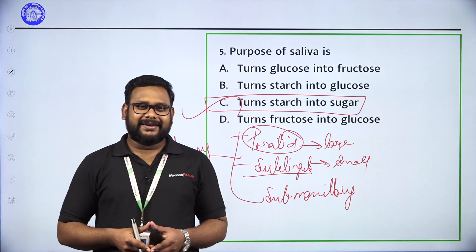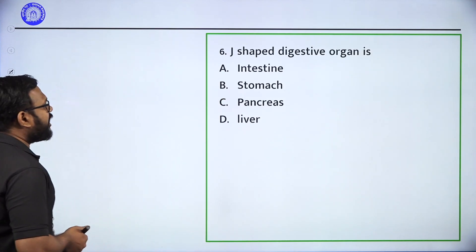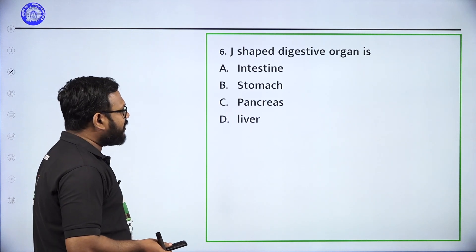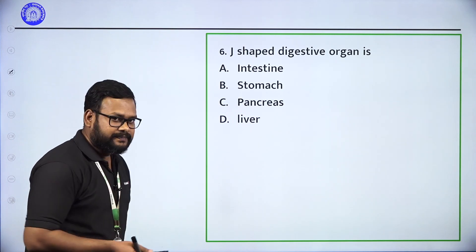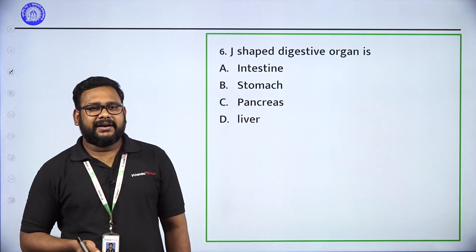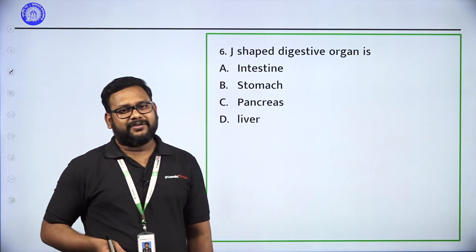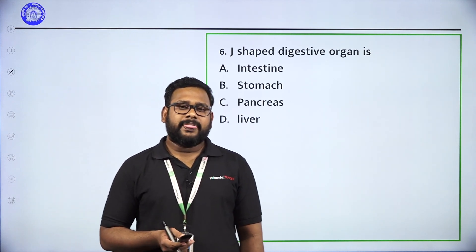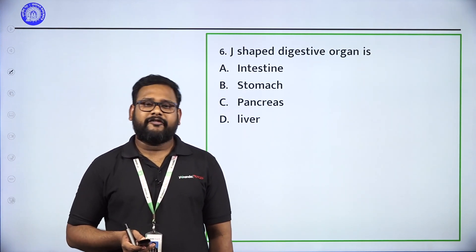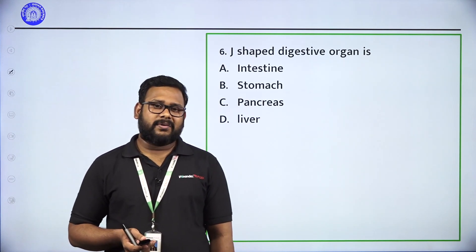Let's look at the next question: The J-shaped digestive organ is — intestine, stomach, pancreas, or liver? We know the digestive system. Where is the digestion? It starts at the mouth.